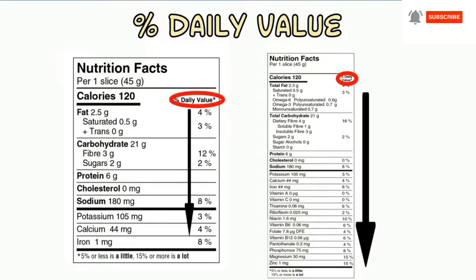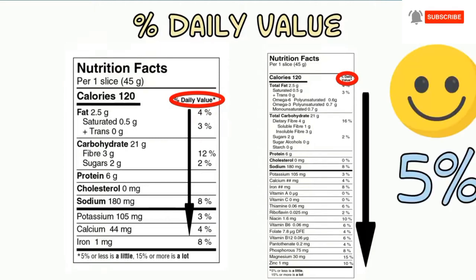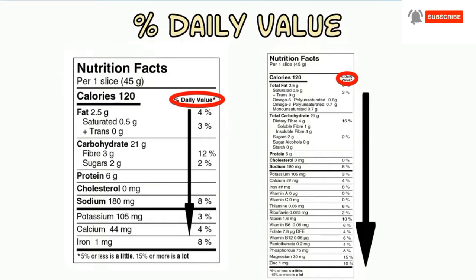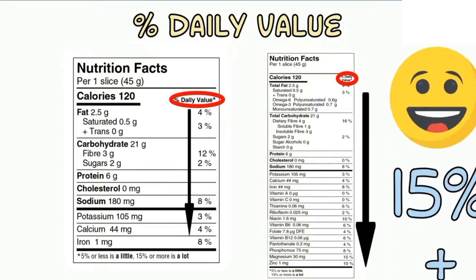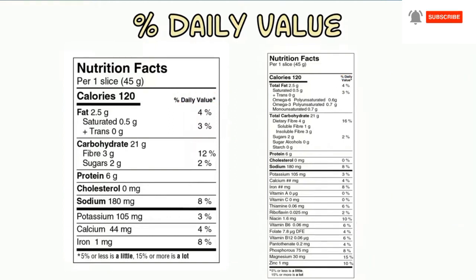The percent daily value on the right-hand side of the table tells you if there is a little bit or a lot of each of the core nutrients. Five percent or less is considered a little bit, while 15 percent or more is considered a lot of a nutrient.